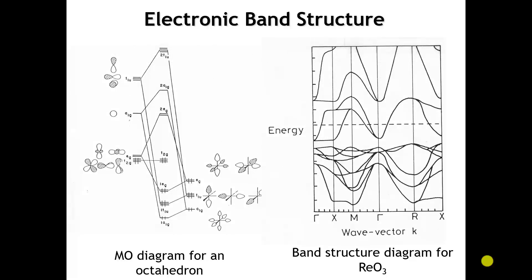Taking you back to the slide I used to introduce our whole study of electronic band structure, at that point I said the goal is to go from this molecular orbital diagram — here the MO diagram on the left is for an octahedron — to a three-dimensional solid that has this band structure diagram. The illustrated band structure diagram I used in that first slide of Chapter 6 was the band structure diagram for rhenium trioxide. So now we are in a position to look at and understand this band structure diagram, and I think we can feel good about that progress.